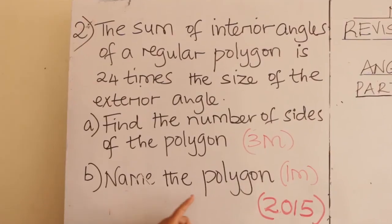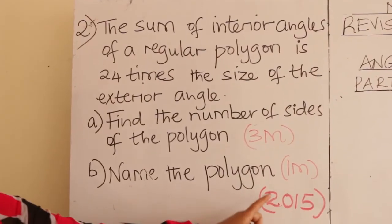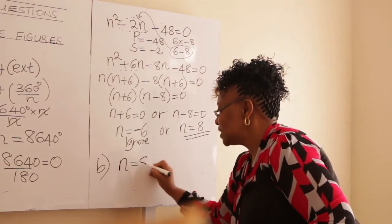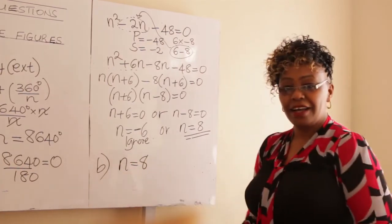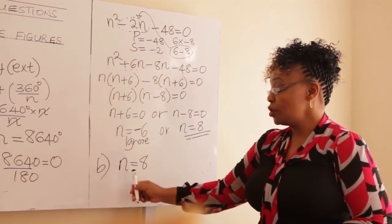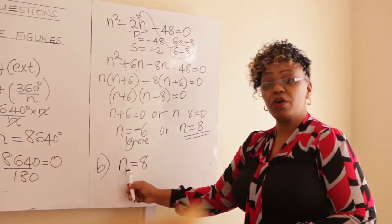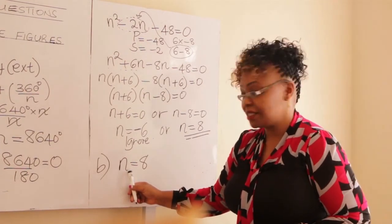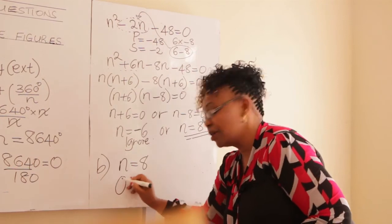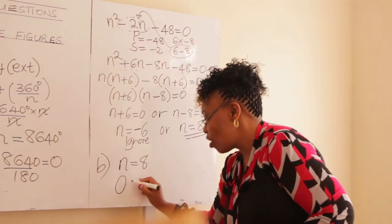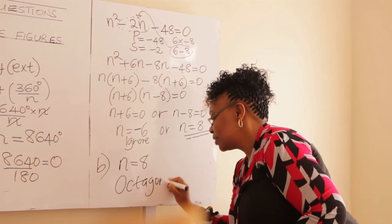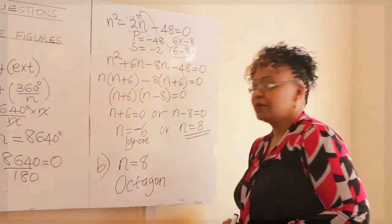Part B: name the polygon. The polygon has 8 sides. A polygon with 8 sides is called an octagon.